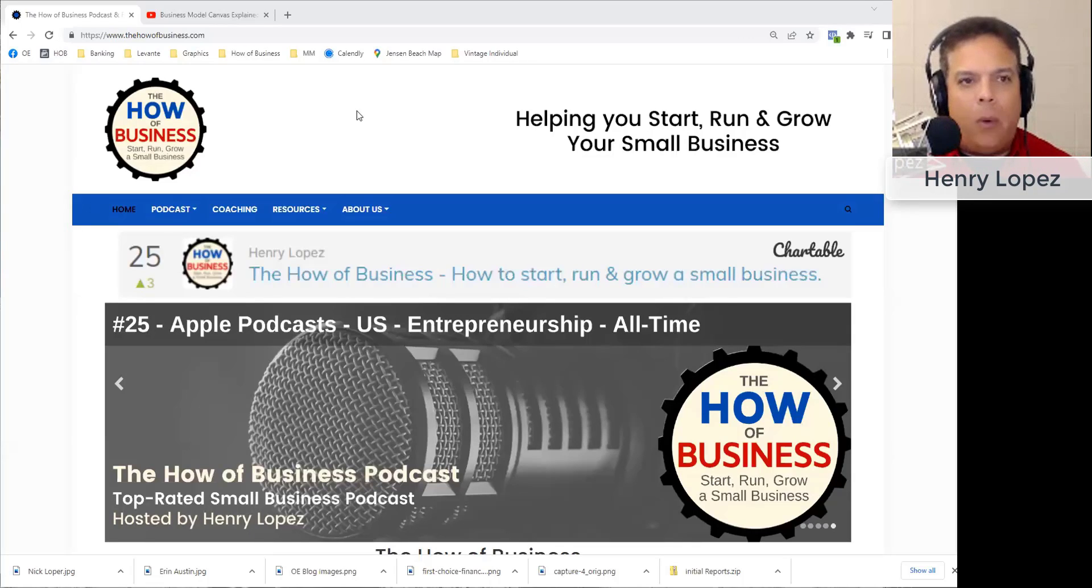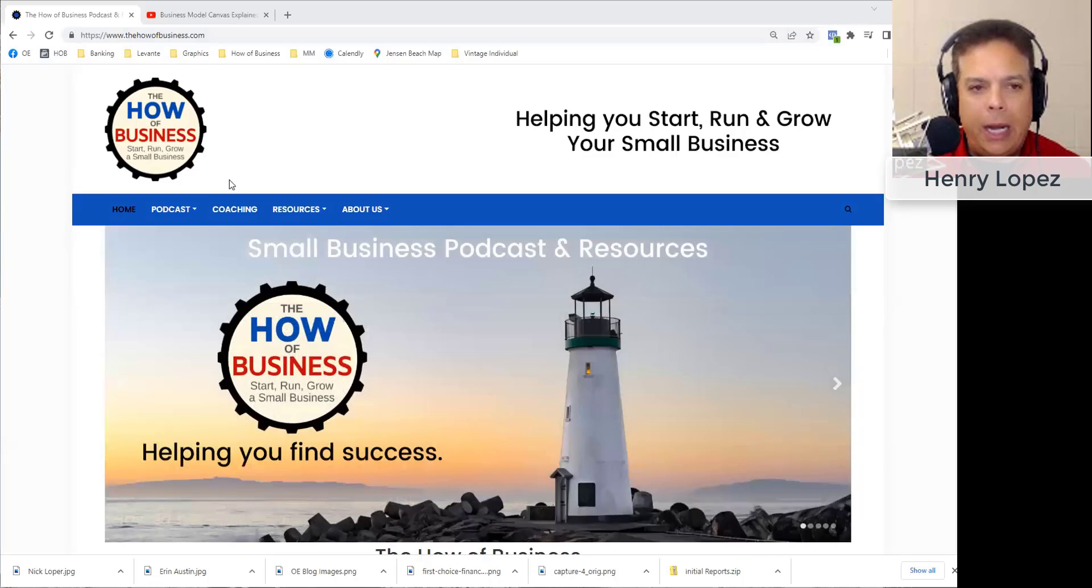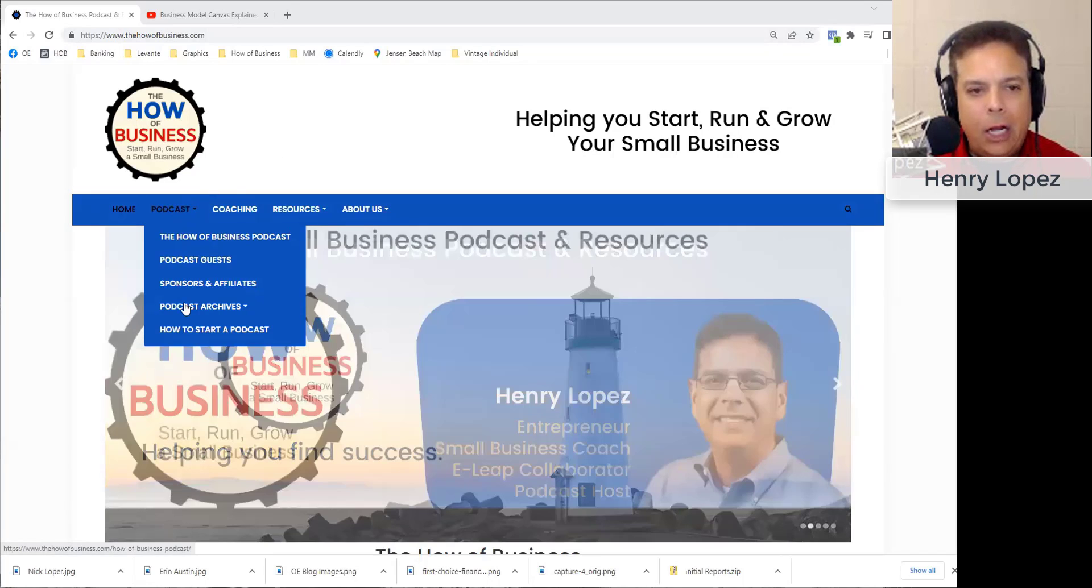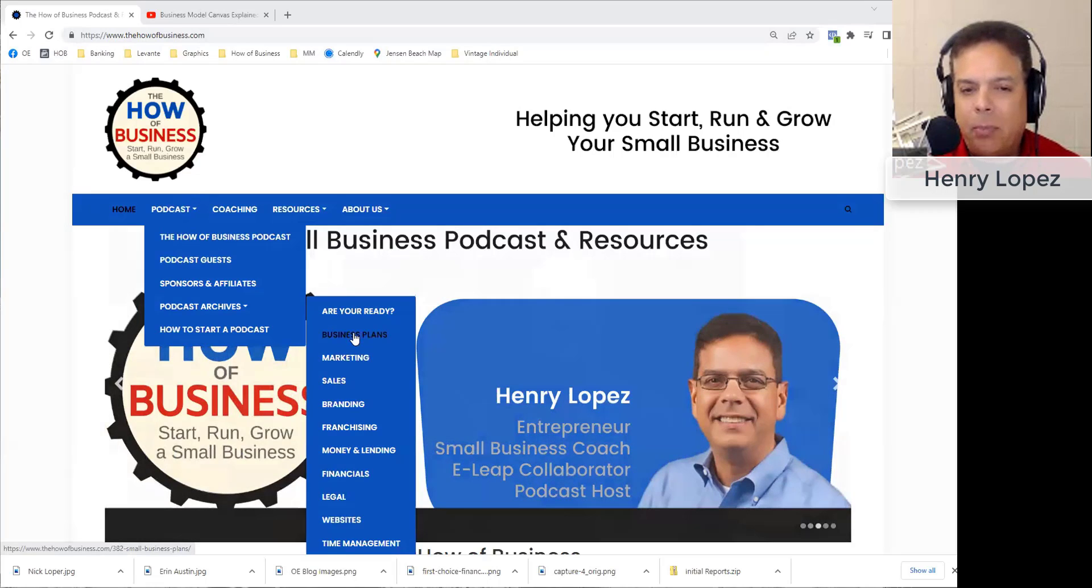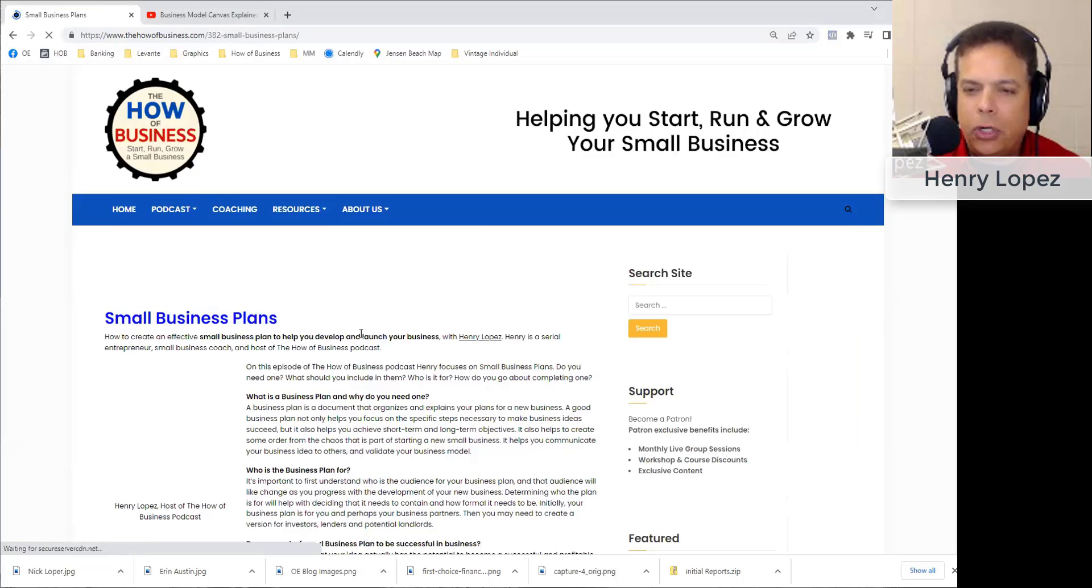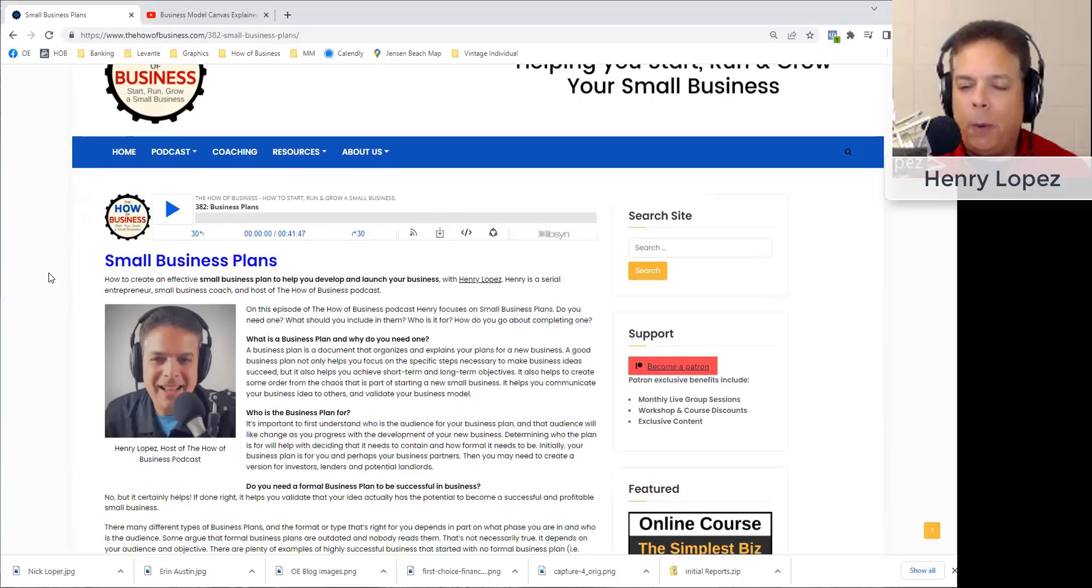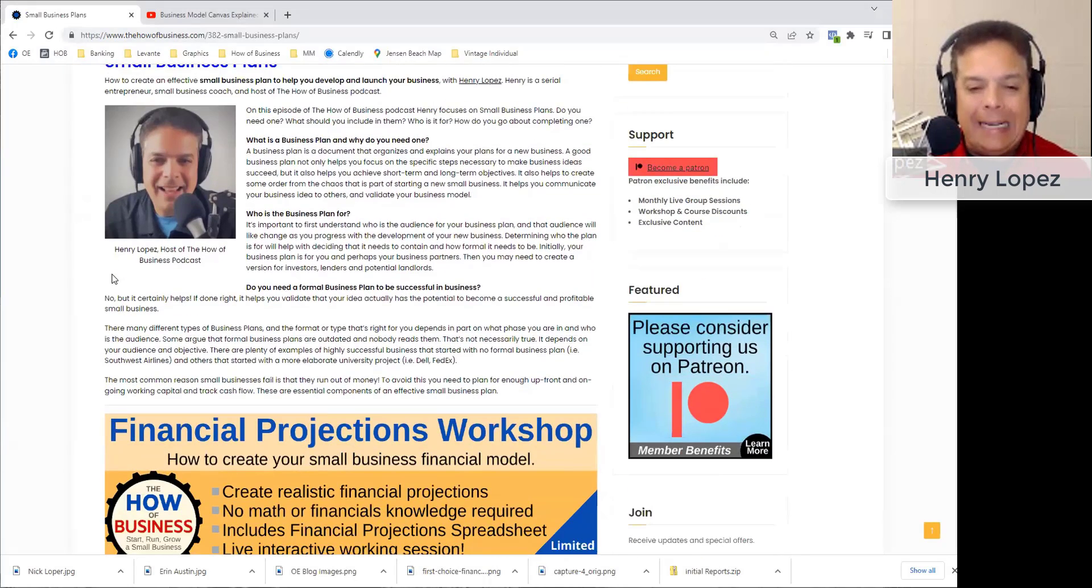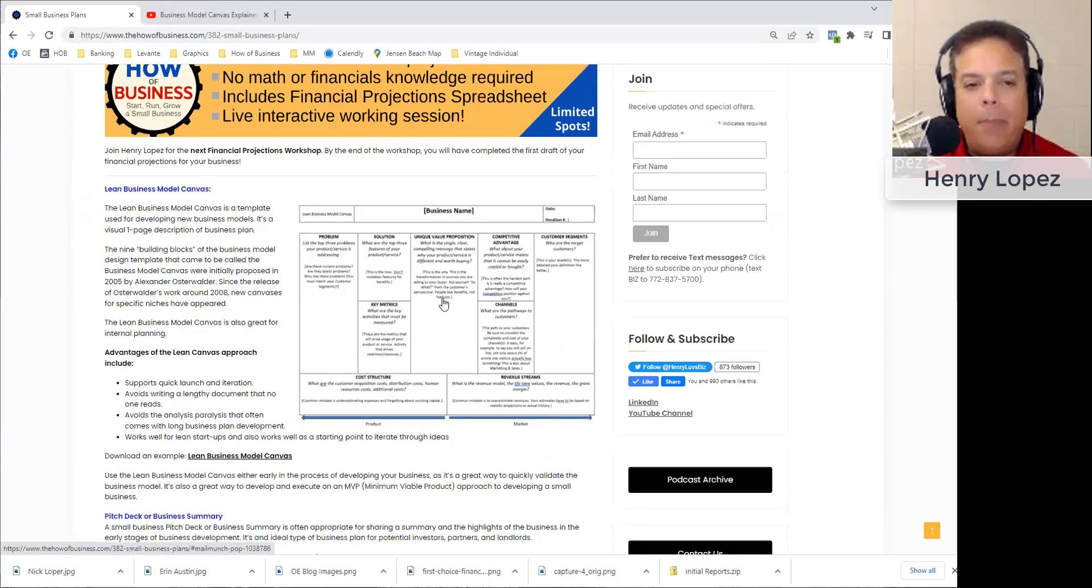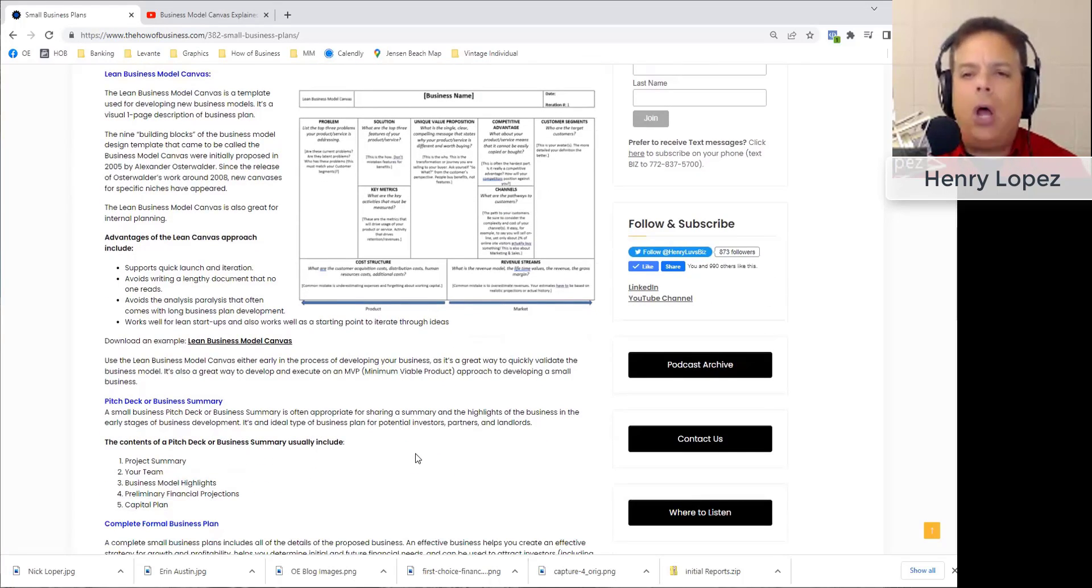On my website for those who haven't been there, thehowofbusiness.com, there are lots of resources. If you go to podcasts, then podcast archive, then business plans, or just search for business plans, this is episode 382 where I talk more in general about business plans. On this page you can find the download to that version of the Lean Canvas I just walked you through. If you search online on Google for Lean Canvas model or MVP approach, you'll find all kinds of resources on this concept.